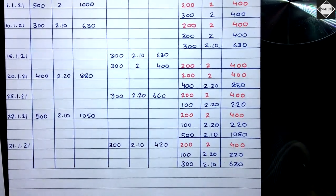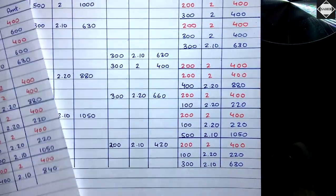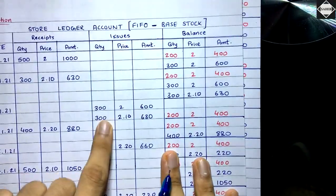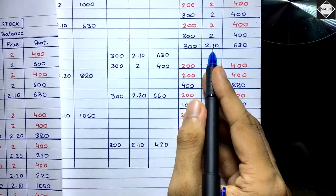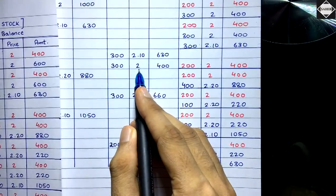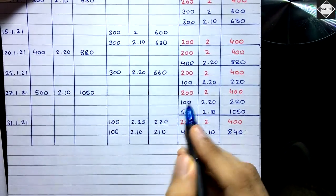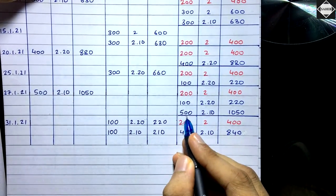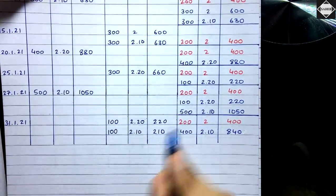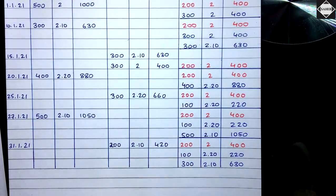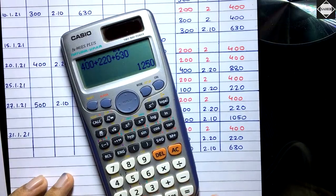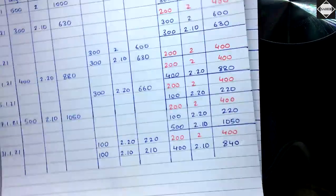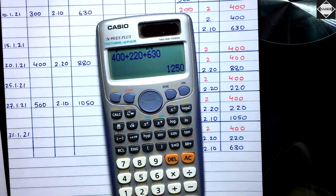The difference between FIFO and LIFO: when sending out 600 units, FIFO starts with the ₹2 lot then ₹2.10, while LIFO starts with the last price ₹2.10 then ₹2. At the final step, FIFO touches the 100 quantity first then the 500 lot, whereas LIFO takes directly from the 500 lot. Closing stock under LIFO: ₹400 + ₹220 + ₹630 = ₹1,250, versus FIFO's ₹1,240 — a ₹10 difference.